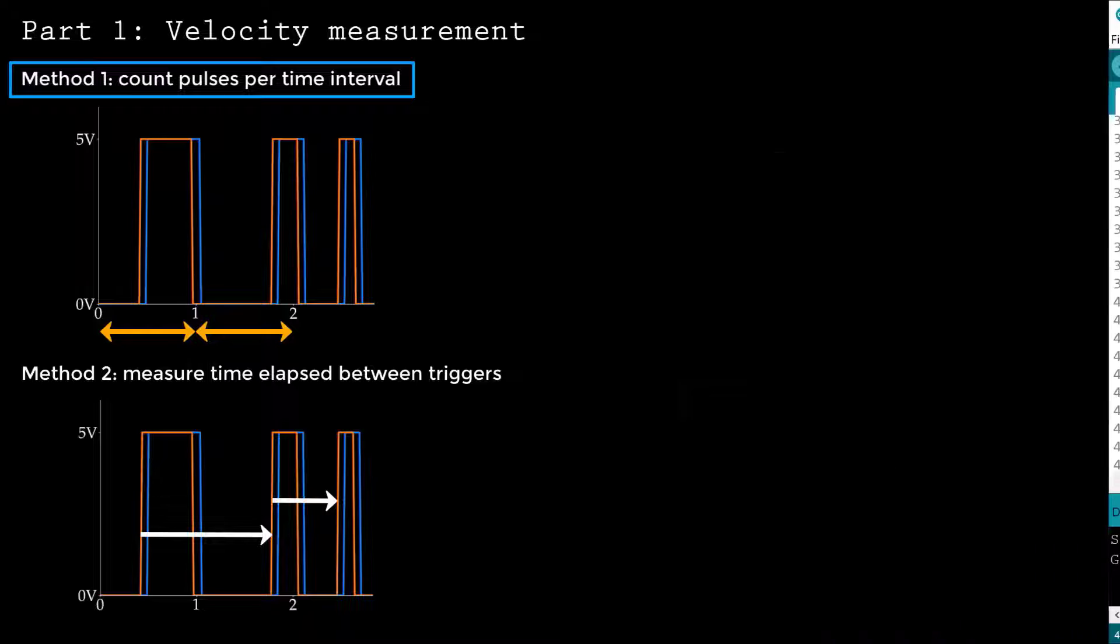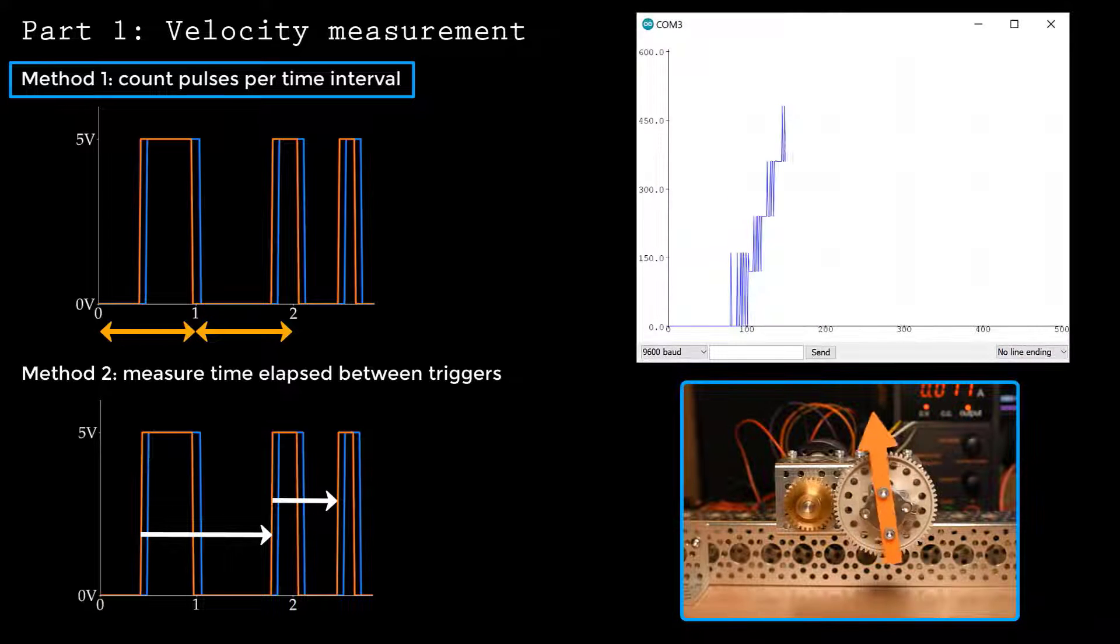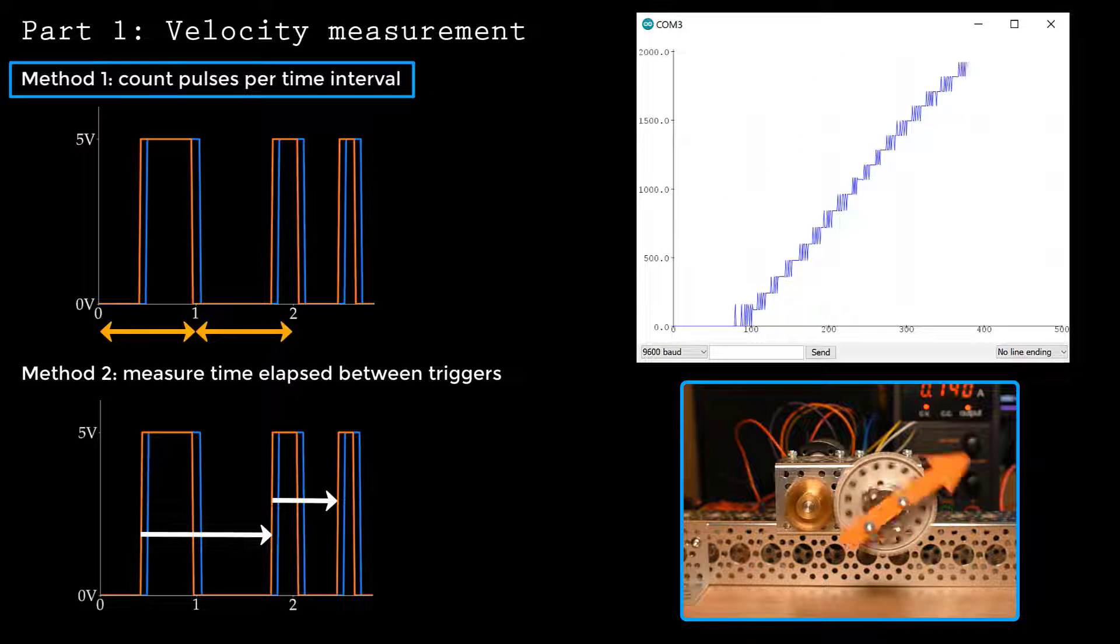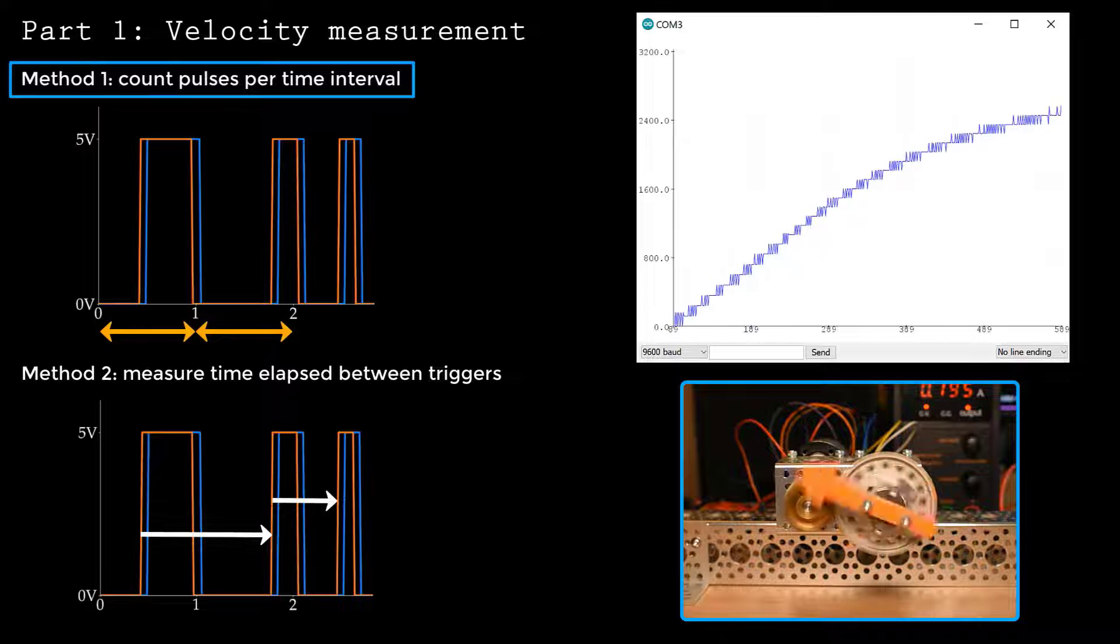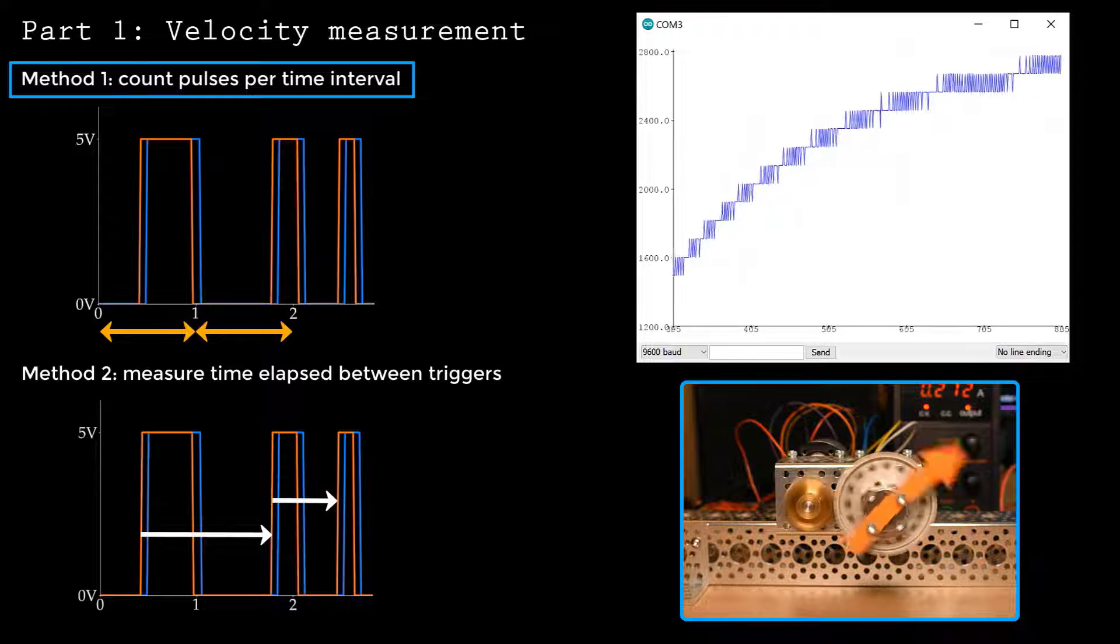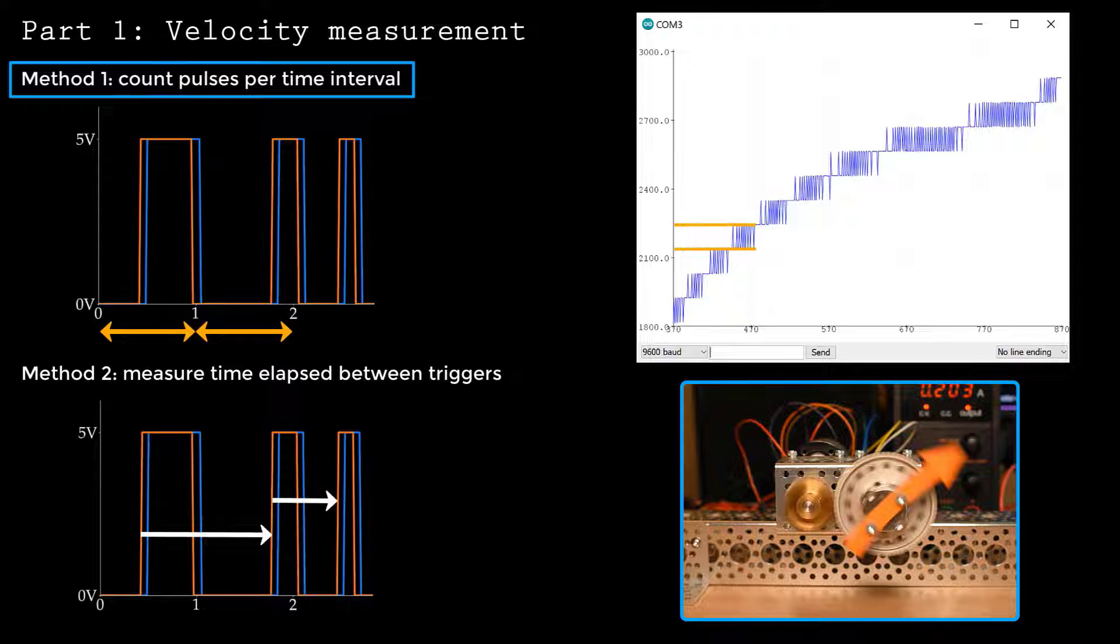Let's see what the speed measurements look like. You can see that the calculated speed increases as we expect, but the speed bounces between levels. These levels are a result of the discrete encoder measurements. This is the main limitation of method one, but as you'll see later in the video, there are ways of alleviating this effect.